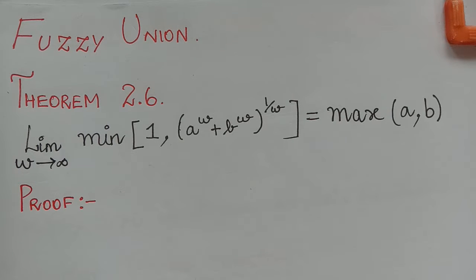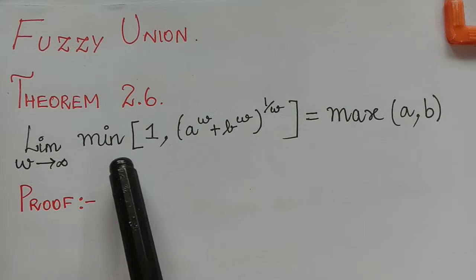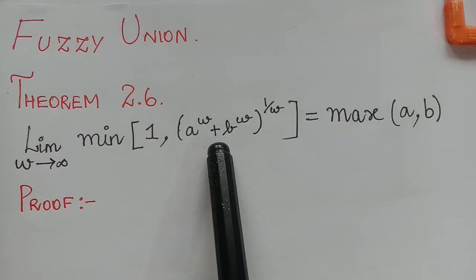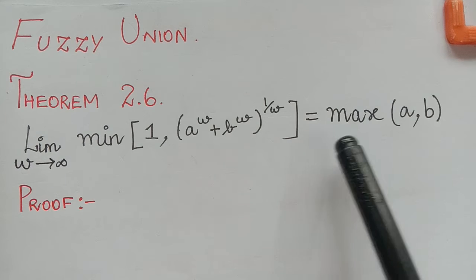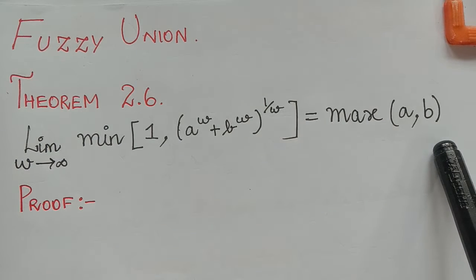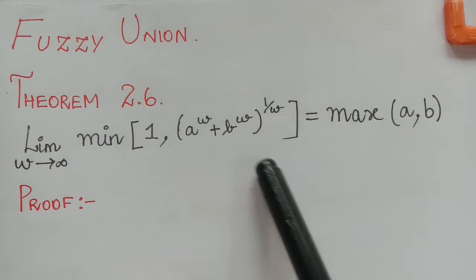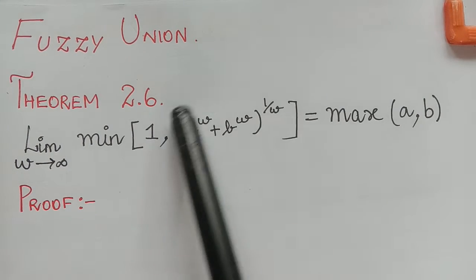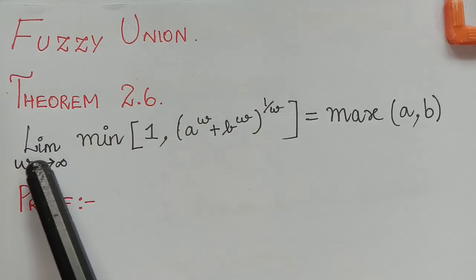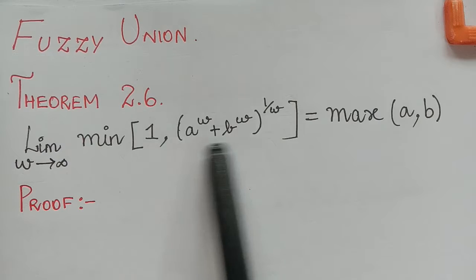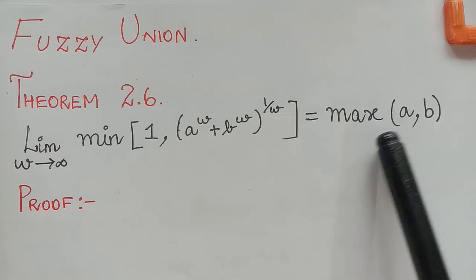Dear students, under the topic fuzzy union, here we have Theorem 2.6 which says that the limit as w tends to infinity of minimum of 1 and (a^w + b^w)^(1/w) is equal to maximum of a, b. We shall prove this theorem, where the function is the Yager class for the fuzzy union which we have already seen in our class lecture.